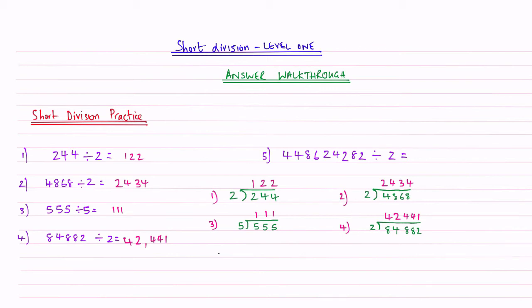And then, question 5. This is the epic one. Let's write all the digits underneath. We've got a 4, a 4, an 8, a 6, a 2, a 4, a 2, an 8, and a 2. And we halve this. And the key is not to be discouraged by the length of this. The method is still the same.